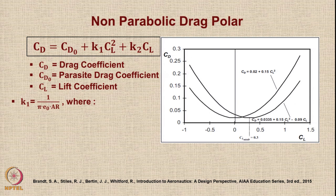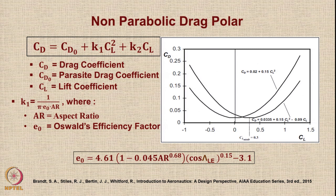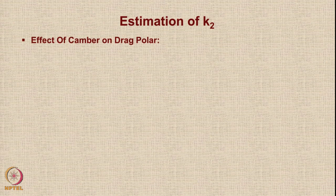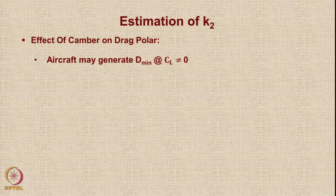K1 can be determined using a formula in terms of wing aspect ratio and leading edge sweep. K2 is used to model the effect of camber on drag polar among other things. Many aircraft generate minimum drag not at the angle where CL equals zero but at a slightly different angle, because an aircraft is wing plus fuselage plus tail. So there are situations where minimum drag does not correspond to CL equal to zero.